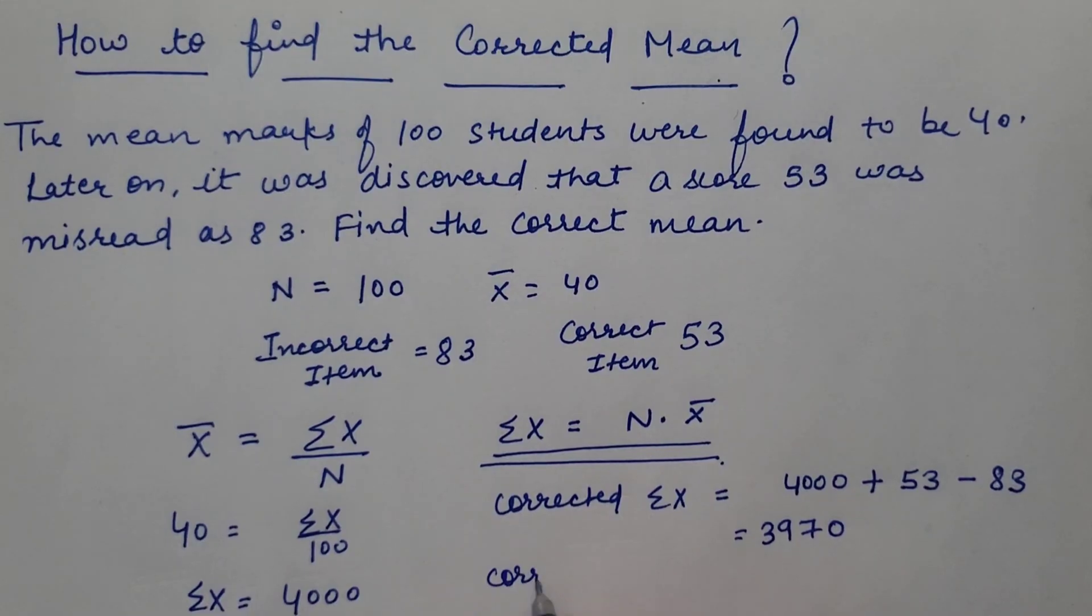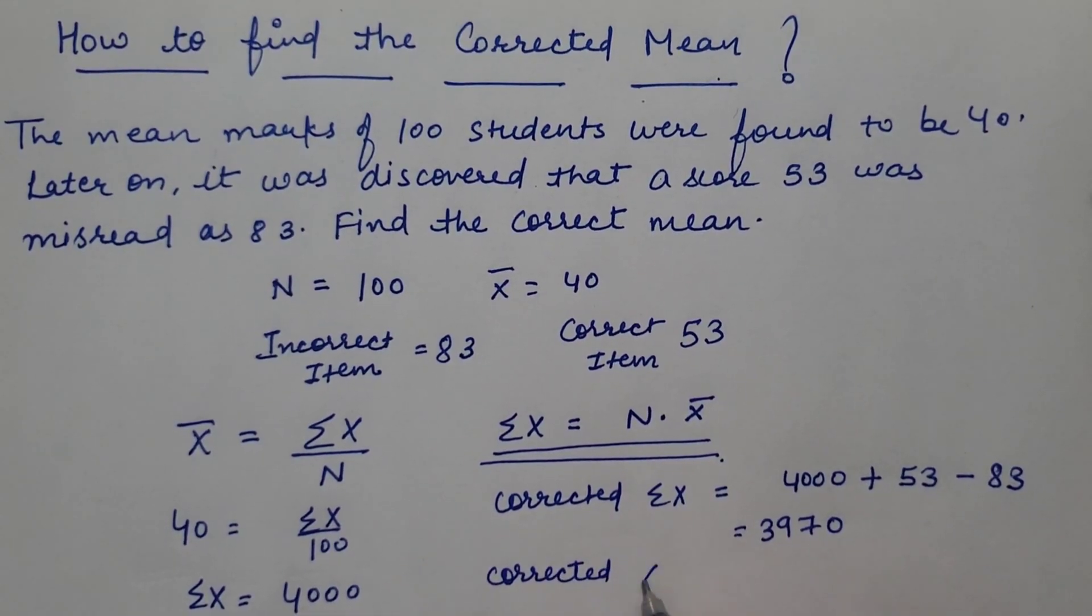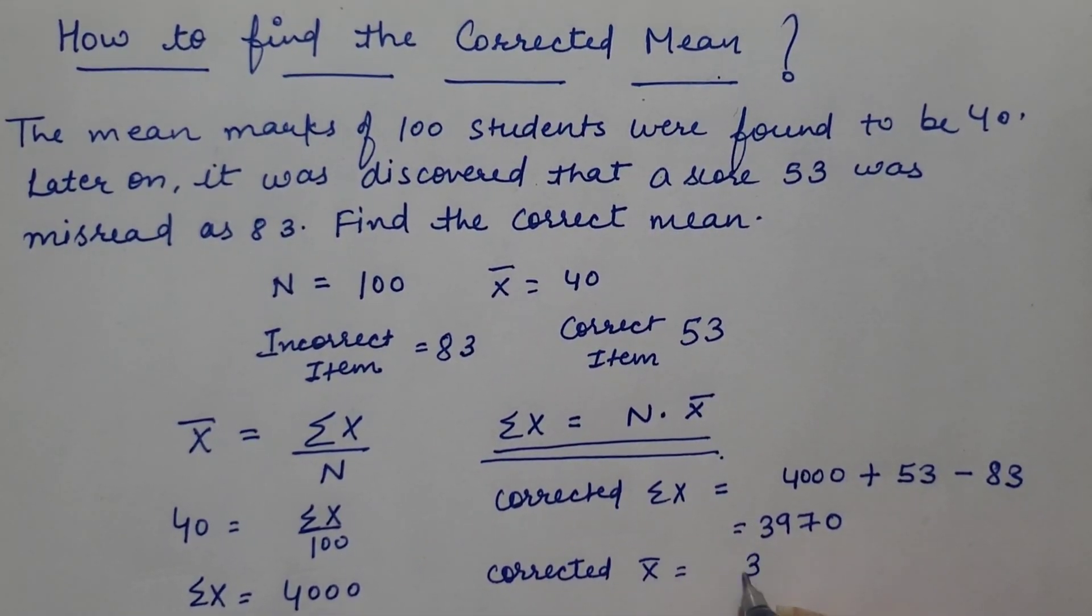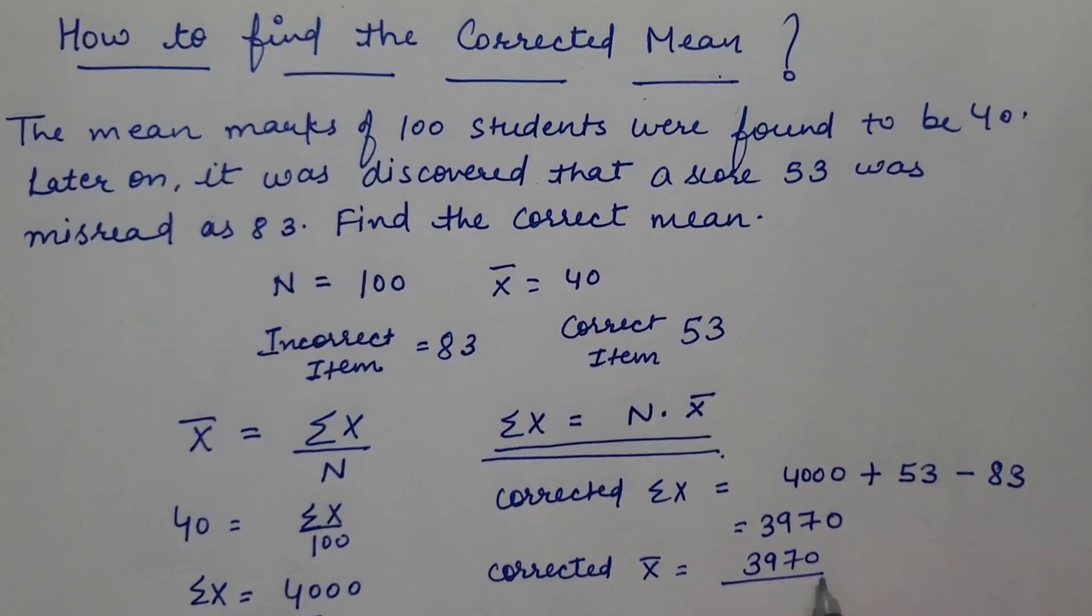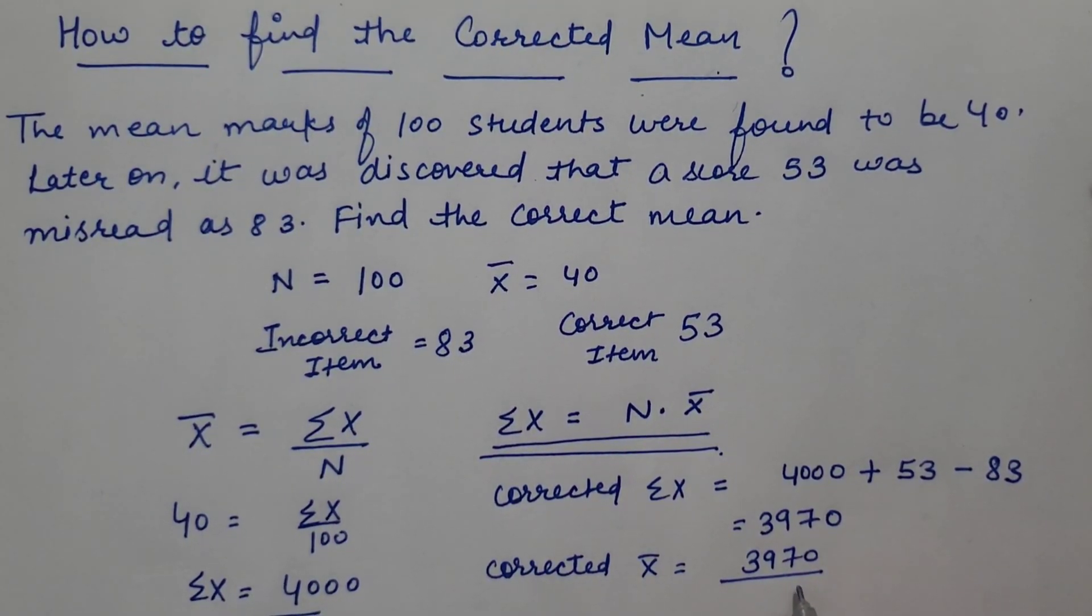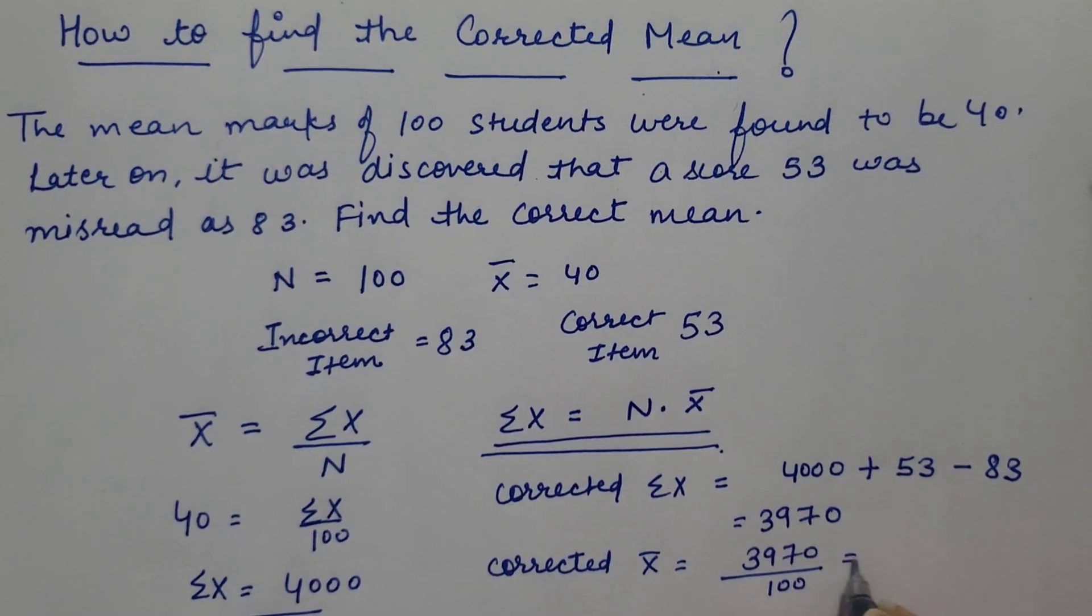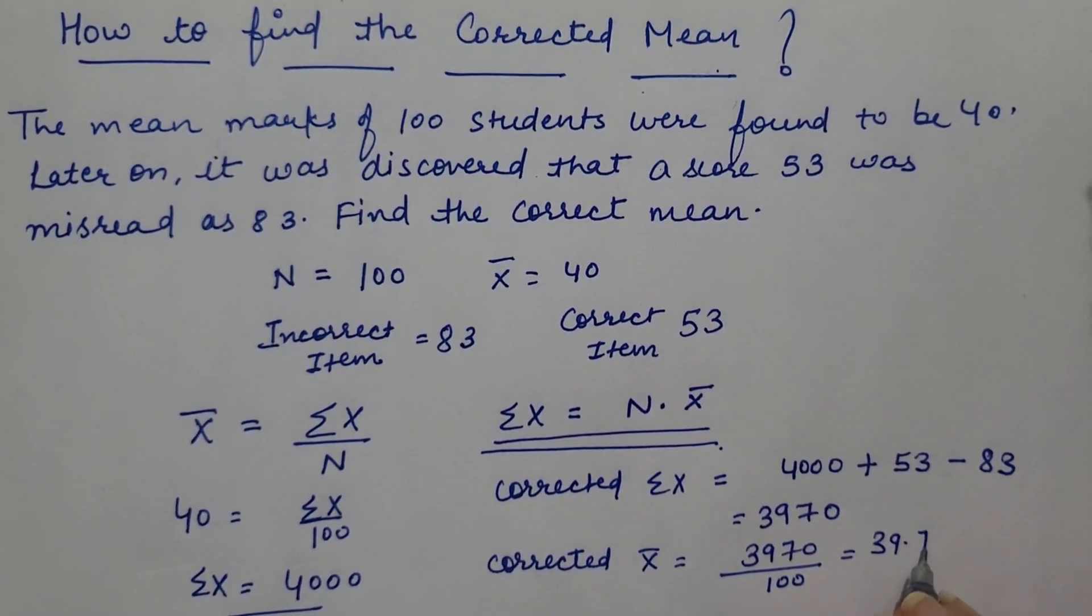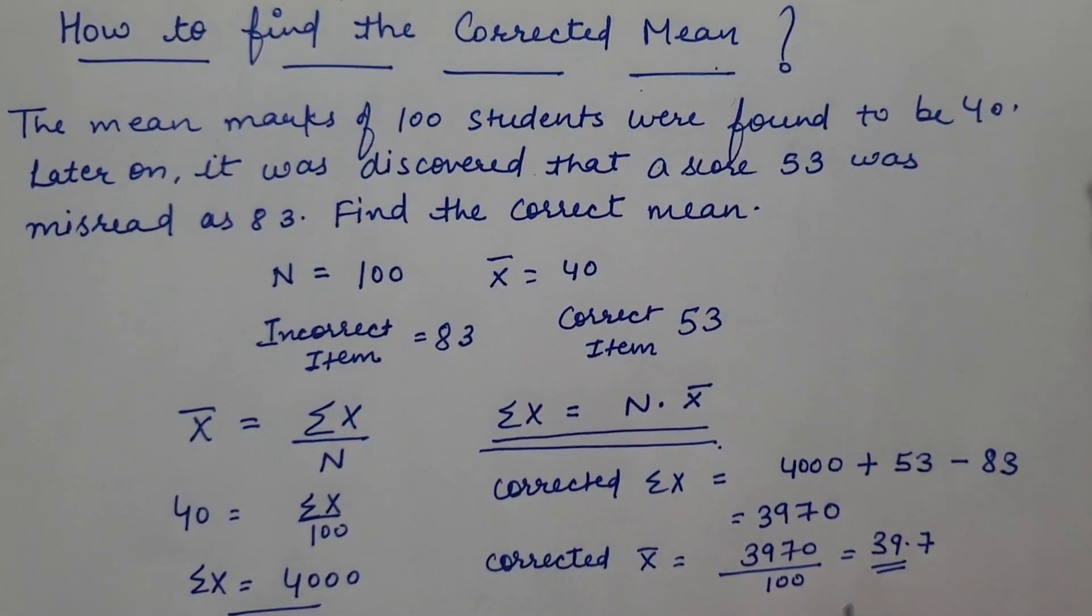So corrected mean would be corrected summation x divided by number of observations, that is 100. So corrected mean is 39.7.